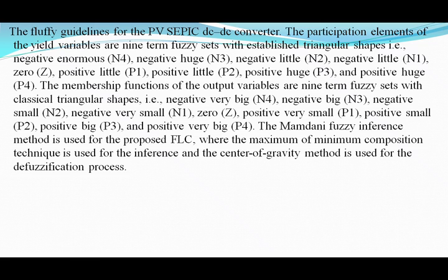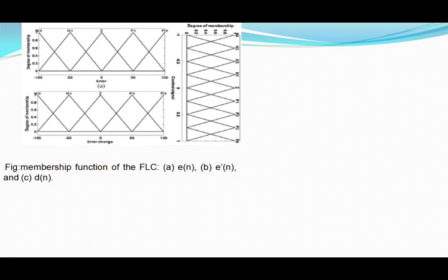Positive small P1, positive medium P2, positive large P3, and positive very large P4. The membership functions of the output variables are also nine-term fuzzy sets with classical triangular shapes — that is, negative very big N4, negative big N3, negative small N2, negative very small N1, zero, positive very small P1, positive small P2, positive big P3, and positive very big P4. The Mamdani fuzzy inference method is used in the FLC, where the maximum-of-minimum composition technique is used for inference. The center of gravity method is used for the defuzzification process. Here is the membership function of the FLC.